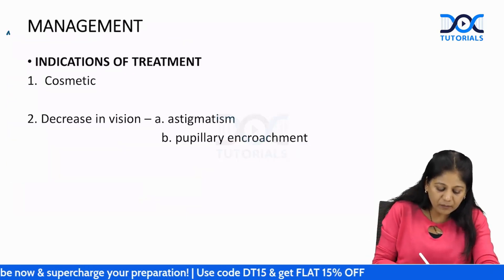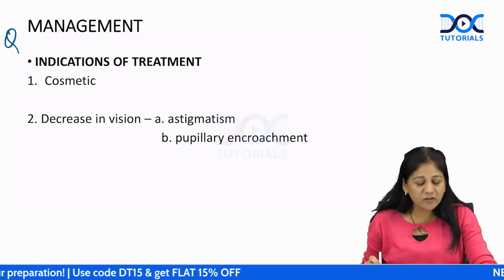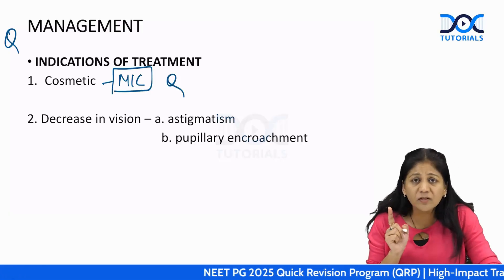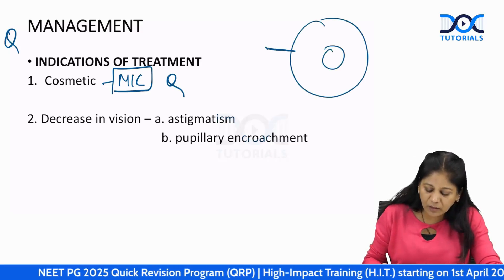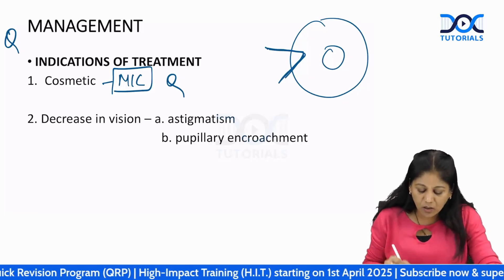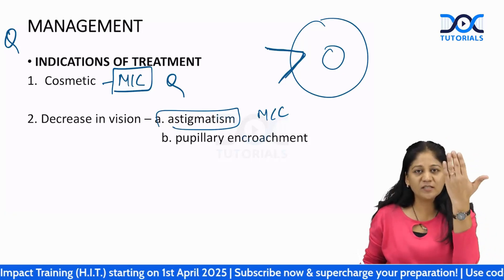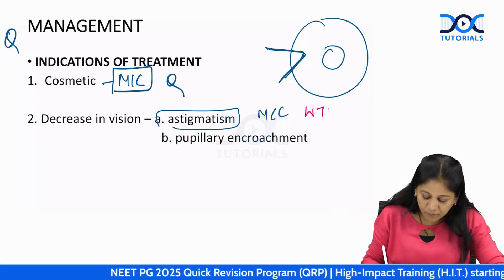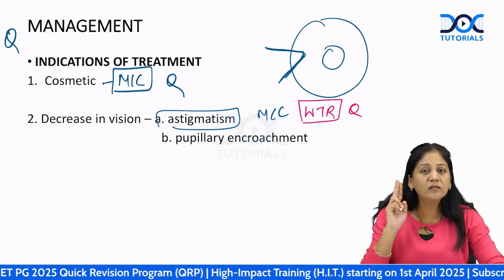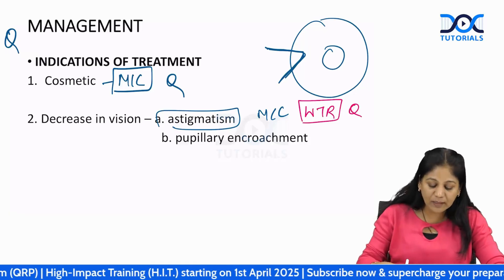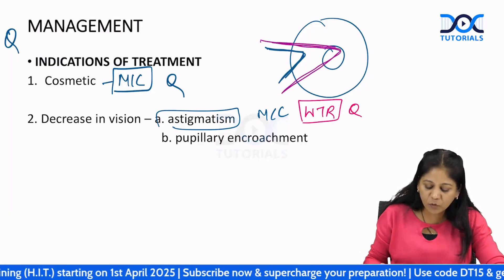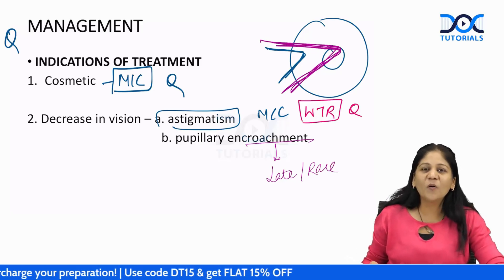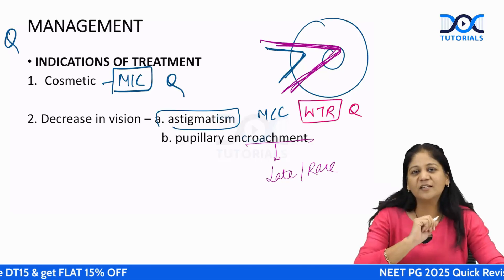The most common indication for treatment is cosmesis, not decrease in vision. However, even a small pterygium can cause decrease in vision due to astigmatism — it changes the curvature of the cornea causing a refractive error. This is a with-the-rule type of astigmatism. Late and less common is when the pterygium grows large and encroaches the pupillary margin.